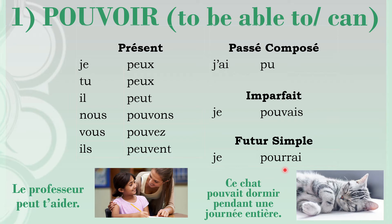Let's look at a couple of sentences using pouvoir. 'Le professeur peut vous aider' — the teacher can help you. And this cat could sleep for an entire day — here 'could' is used because it is the past tense, and the past tense of 'can' is 'could.'